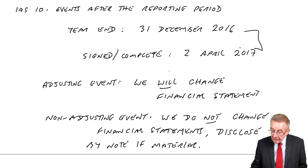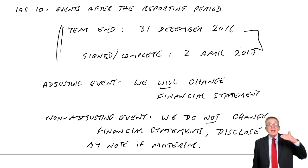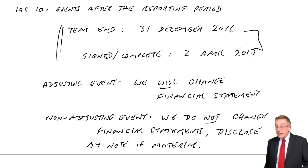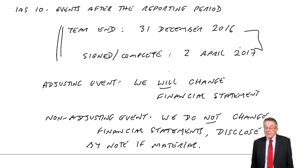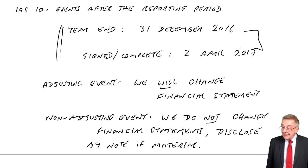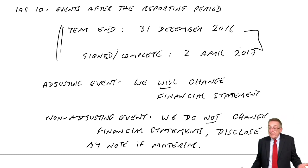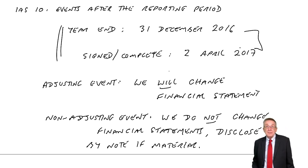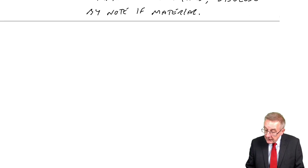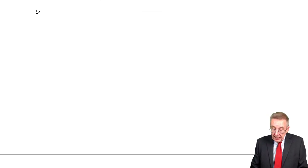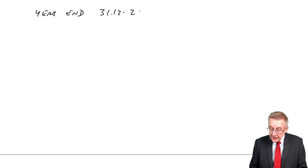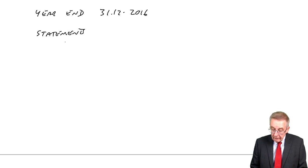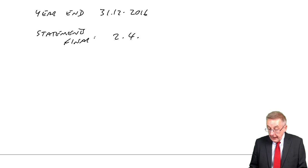Remember what we're talking about: anything that happens between the end of the accounting period — in my example, December 2016 — and when the accounts become final. There's no fixed time for that; suppose it was the 2nd of April 2017. Let me give you a few examples with dates. Our year end is 31st December 2016, and the statements become final on the 2nd of April 2017.